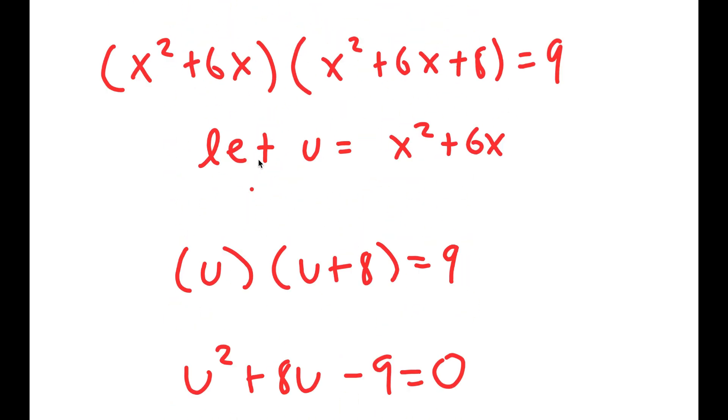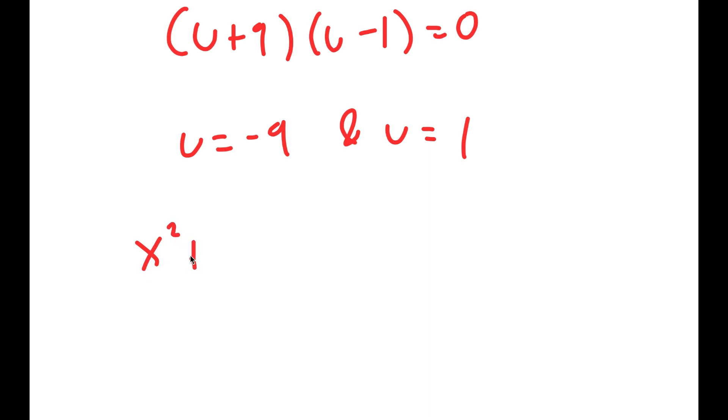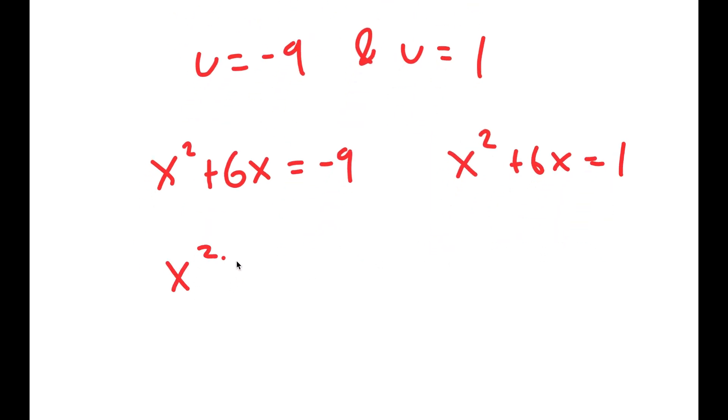Now let's go back. We let u equal x² + 6x, so u = -9 means x² + 6x = -9, and x² + 6x also equals 1. So I have two equations from this.